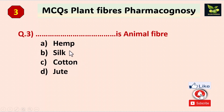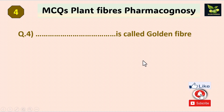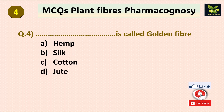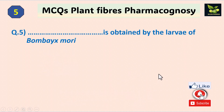The answer is silk. Silk and wool are animal fibers. Question four: which is called the golden fiber? Options are hemp, silk, cotton, and jute. We know that from jute we prepare various types of ropes and they are of golden color, so jute is called the golden fiber.